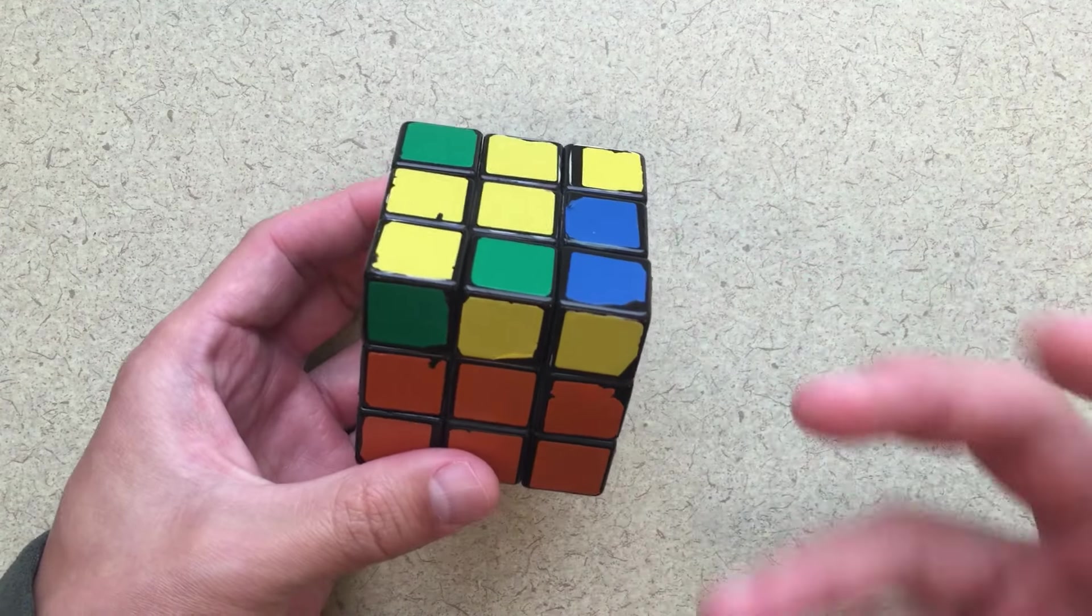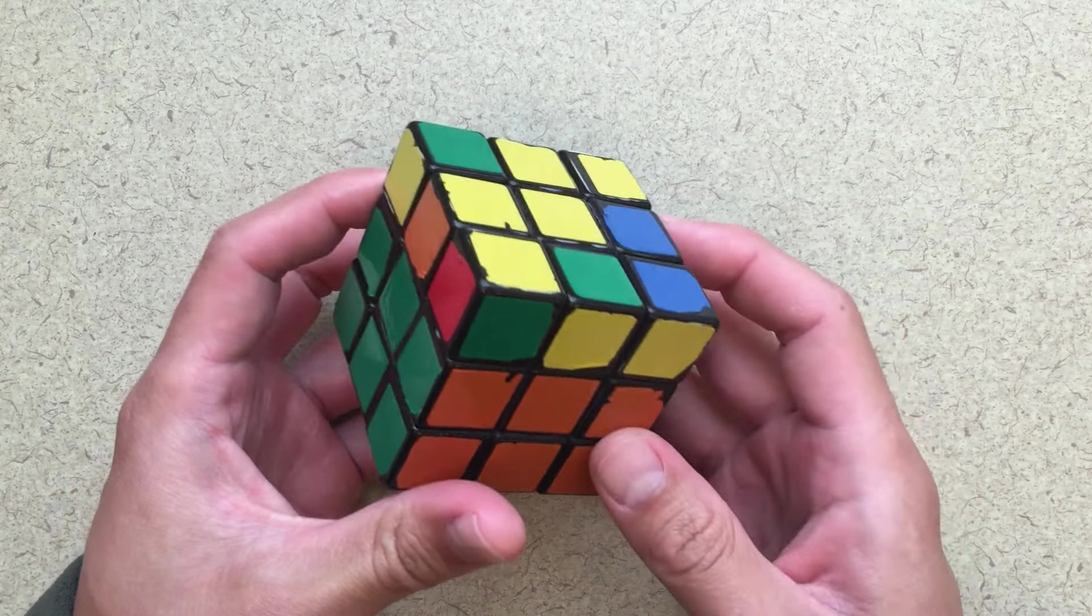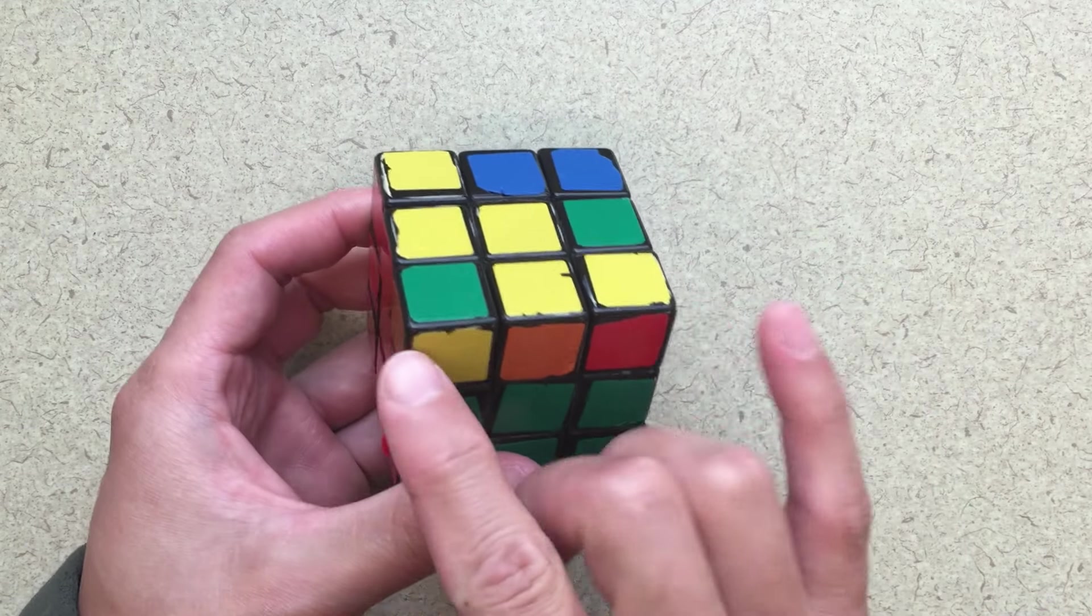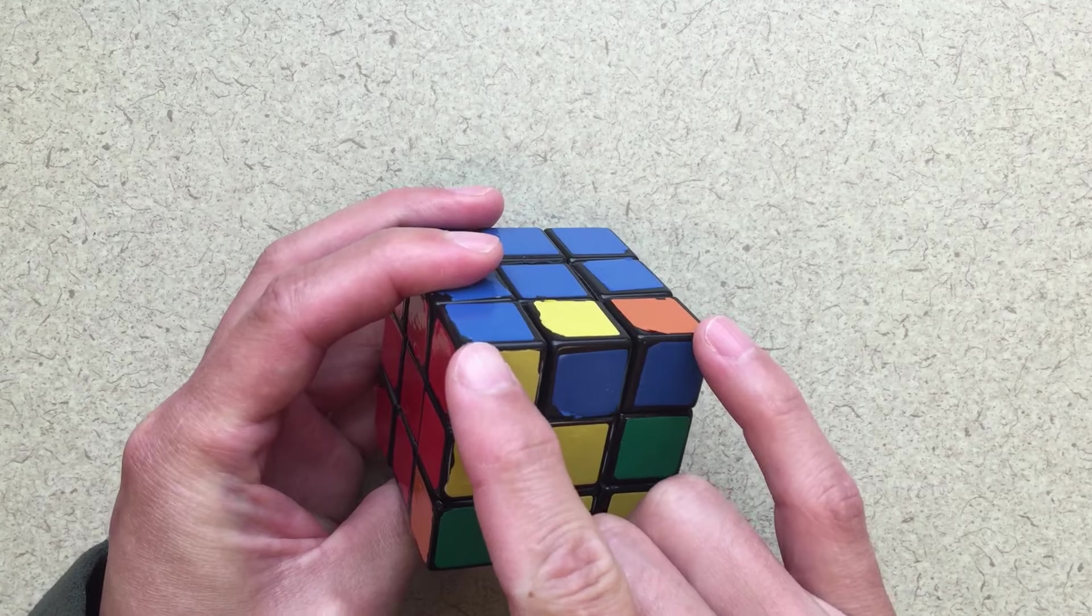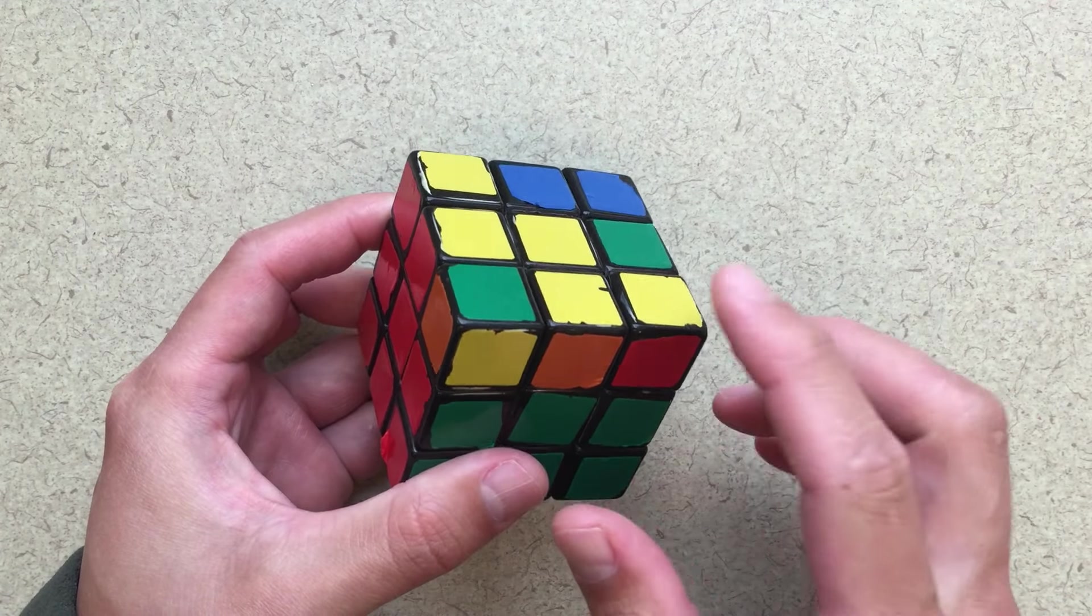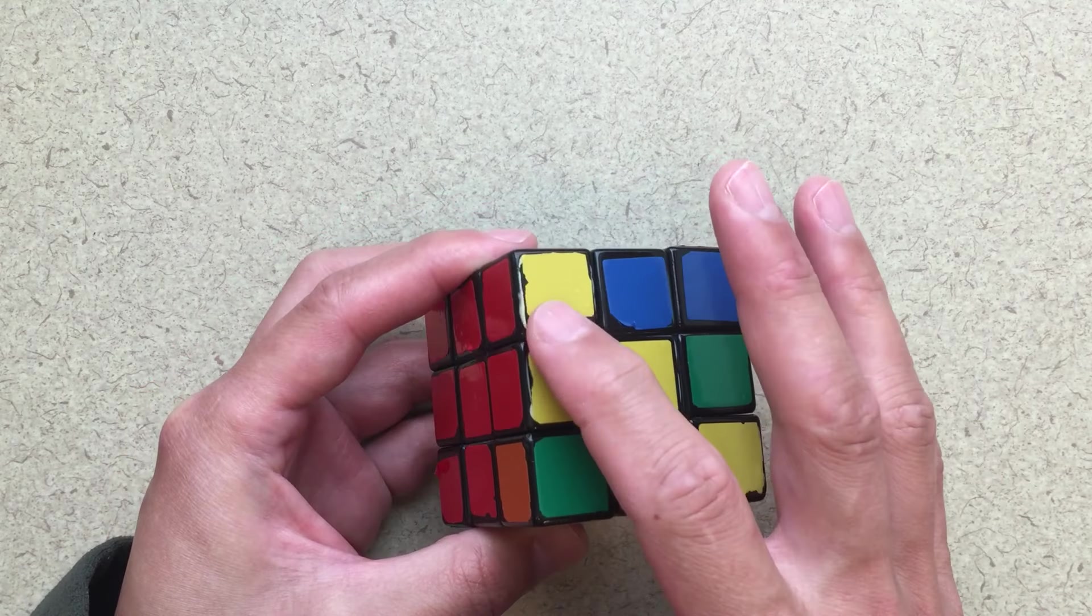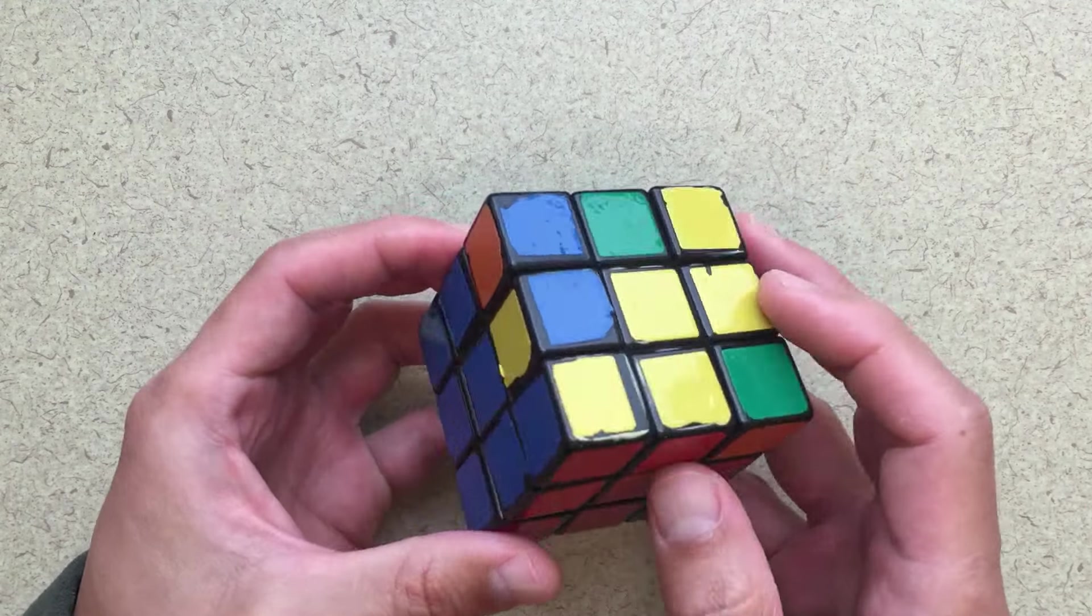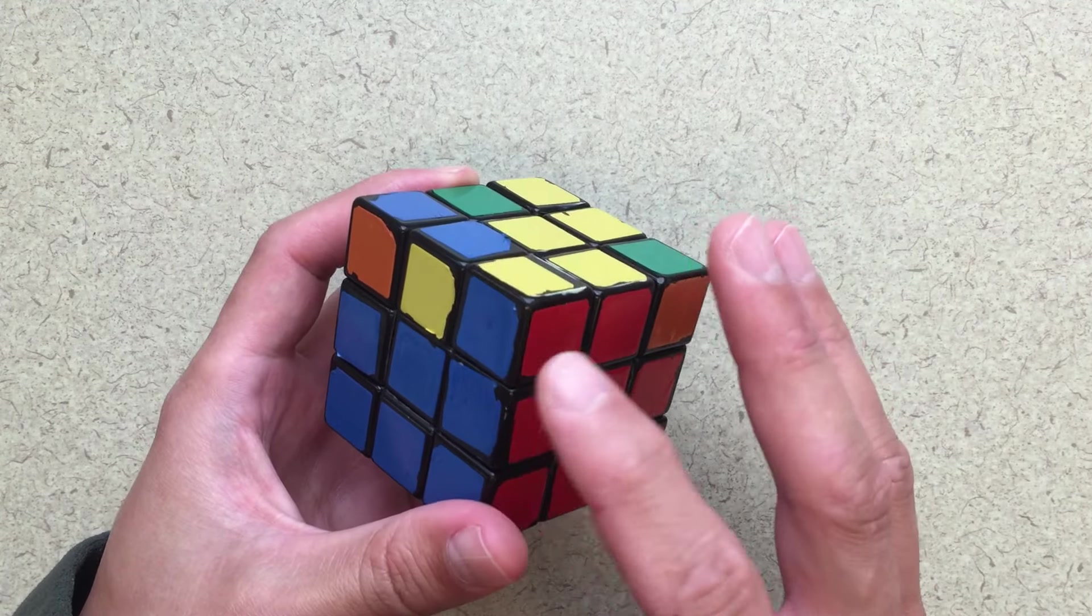The first part of this is called the corner switching move, and essentially the goal of this move is to put the correct corner pieces in the correct spots. The orientation, like where the yellow is, that doesn't matter.